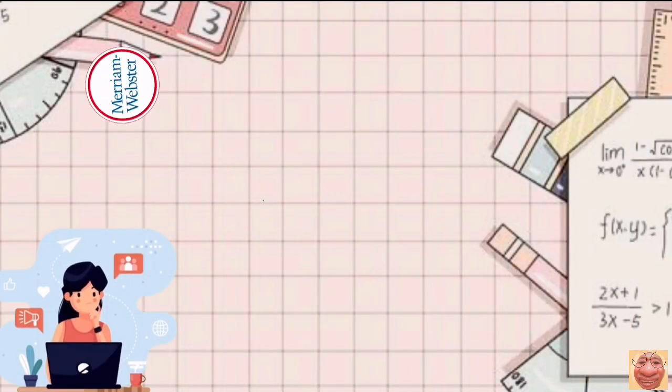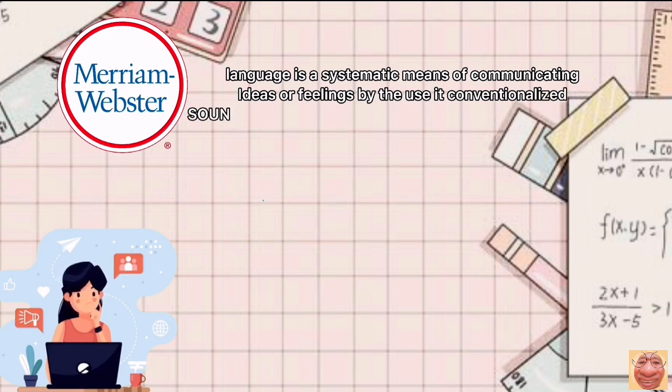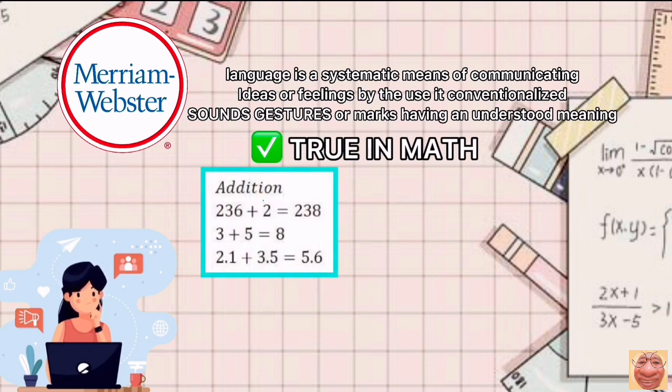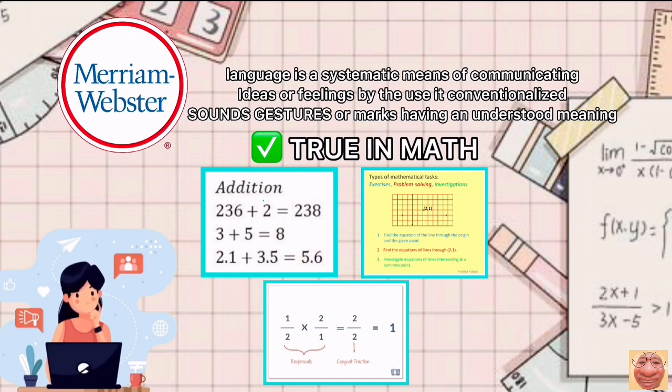According to Merriam-Webster, language is a systematic means of communicating ideas or feelings by the use of conventionalized sounds, gestures, or marks with understood meaning. This is also true in math. To be able to understand mathematical ideas, one must first learn the mathematical language and symbols.